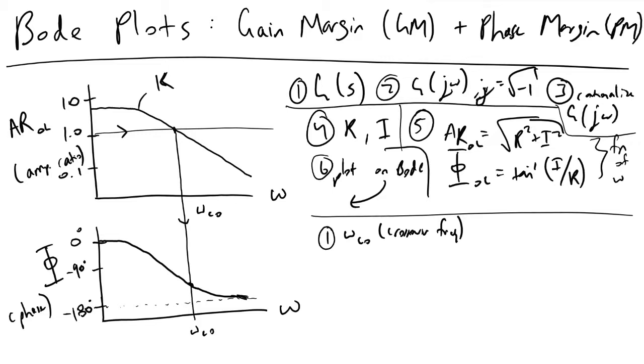And omega CO will have some phase associated with it. So what we'll note here is that our system, as you'll recall from previous discussions, is stable as long as the phase is greater than minus 180 degrees.